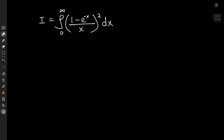We'll start off simple by using an integration by parts approach, noticing that we have 1 over x squared dx, which of course equals the differential of negative 1 over x.